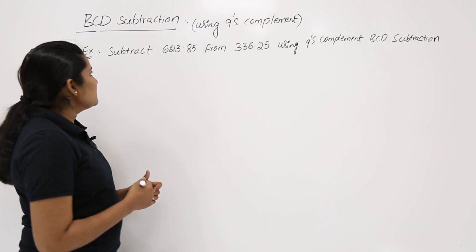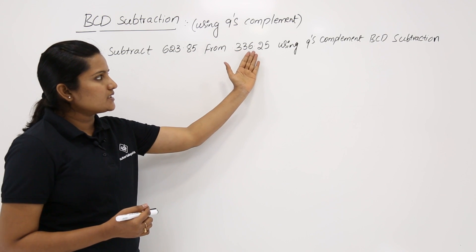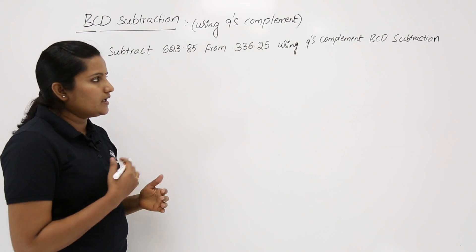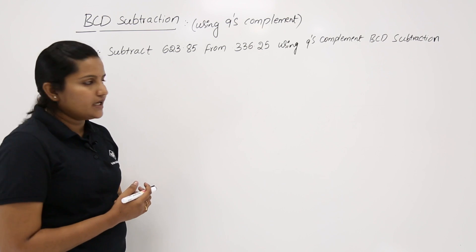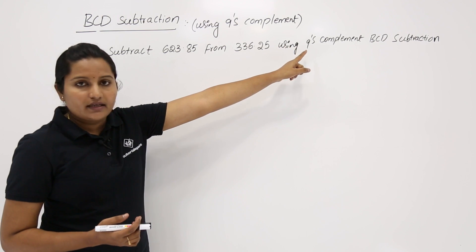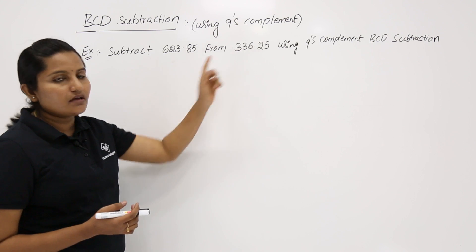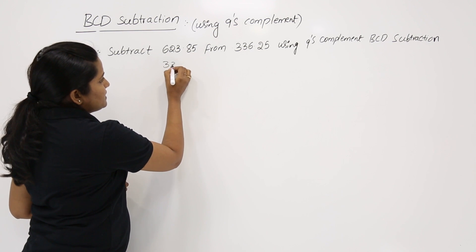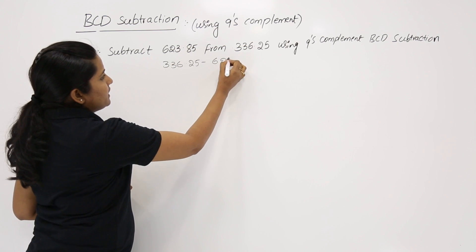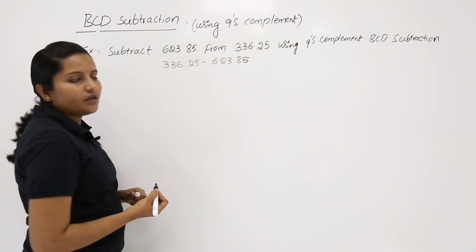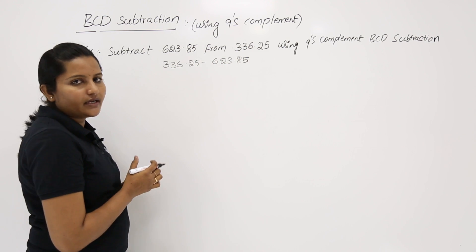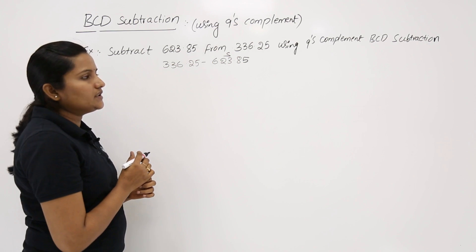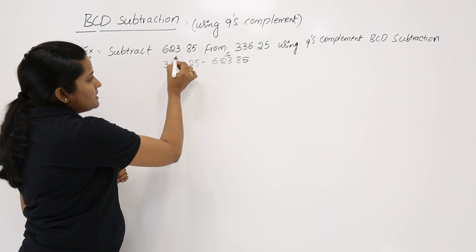The problem is: subtract 623.85 from 336.25 using 9's complement BCD subtraction process. When you get a question like this in any descriptive or gate exam, note that the two given numbers are BCD numbers. So we need to perform 336.25 minus 623.85, where 623.85 is the subtrahend and 336.25 is the minuend.